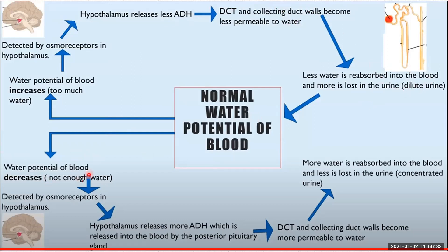Conversely, if the water potential of the blood decreases — not enough water — osmoreceptors detect this and the hypothalamus releases more antidiuretic hormone, which is then released by the posterior pituitary gland into the blood. This causes the distal convoluted tubule and collecting ducts to become more permeable to water through the aquaporin cascade, so more water is absorbed into the blood and less is lost in the urine, producing small volumes of concentrated urine.